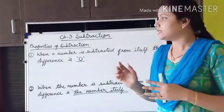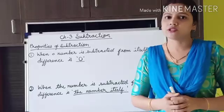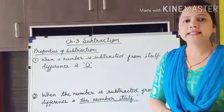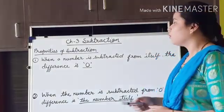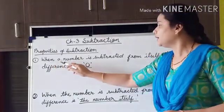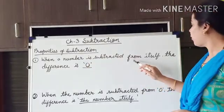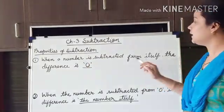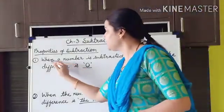In this video I am going to describe the 4 different properties of subtraction. Let us start with the first property. When a number is subtracted from itself, the difference is 0.